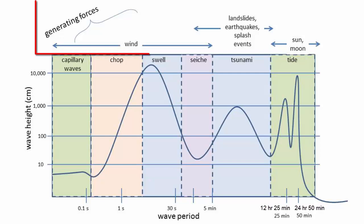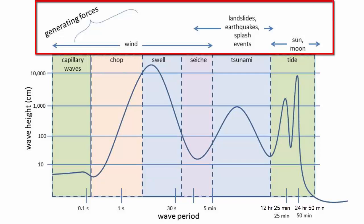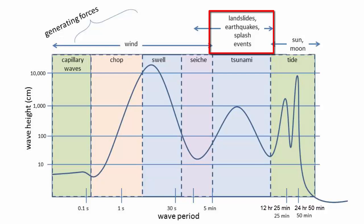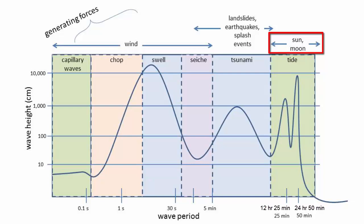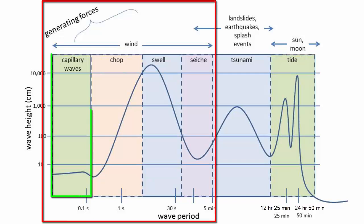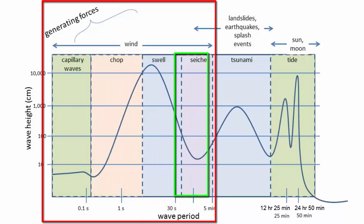Now let's return to generating force. There are three primary generating forces for waves in the ocean: wind; displacement of large volumes of water — think of a large splash when you jump in the ocean or when you drop a rock in a puddle; and uneven forces of gravitational attraction between the earth and the moon and the sun. This image shows these different generating forces and the different heights, periods, and names of the waves that are produced. Wind-generated waves include the tiny capillary waves, chop, swell, and sesh.